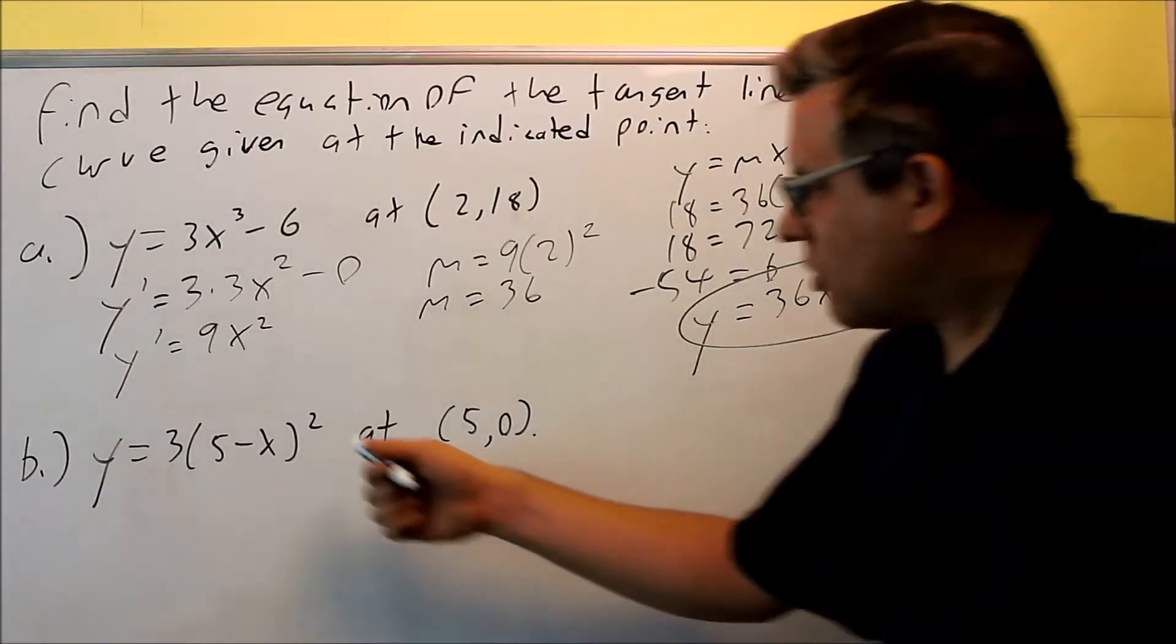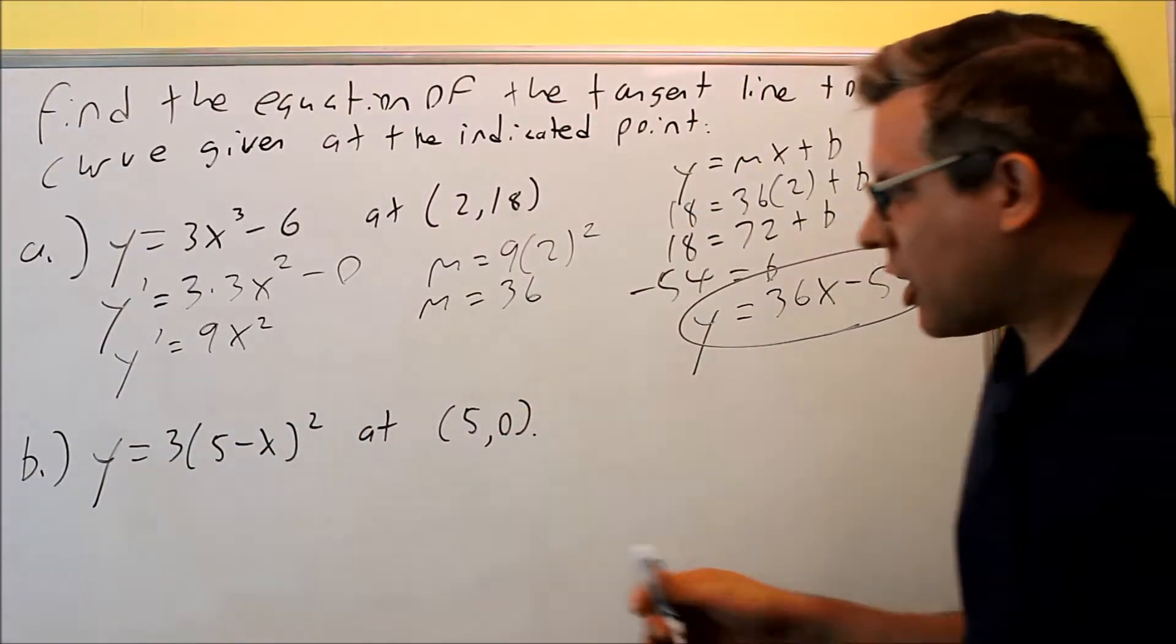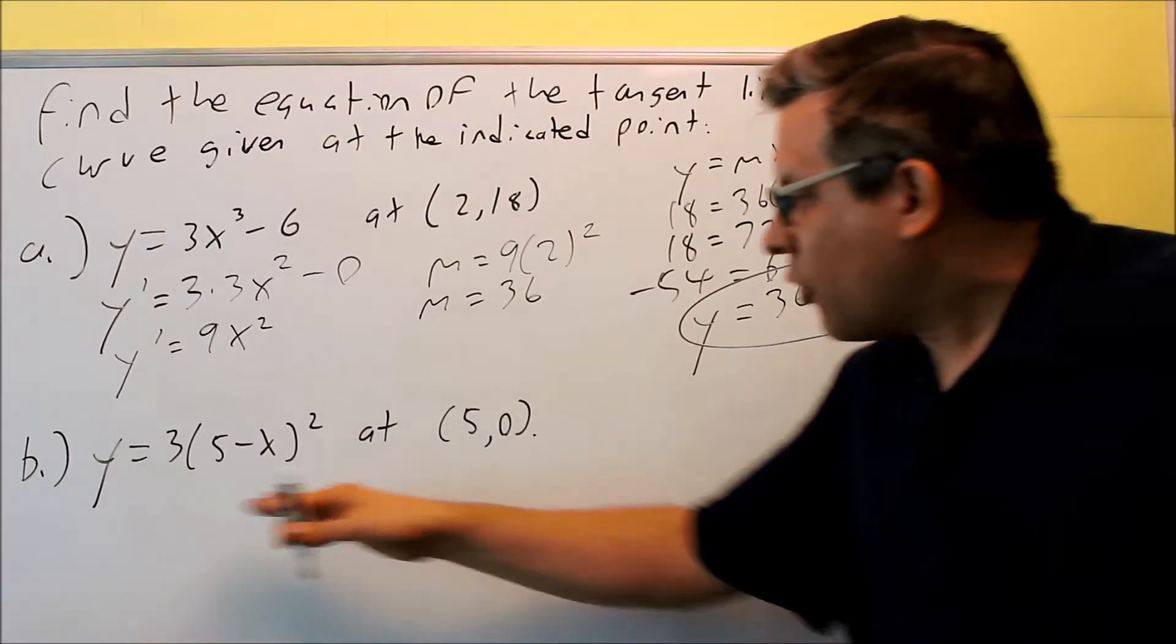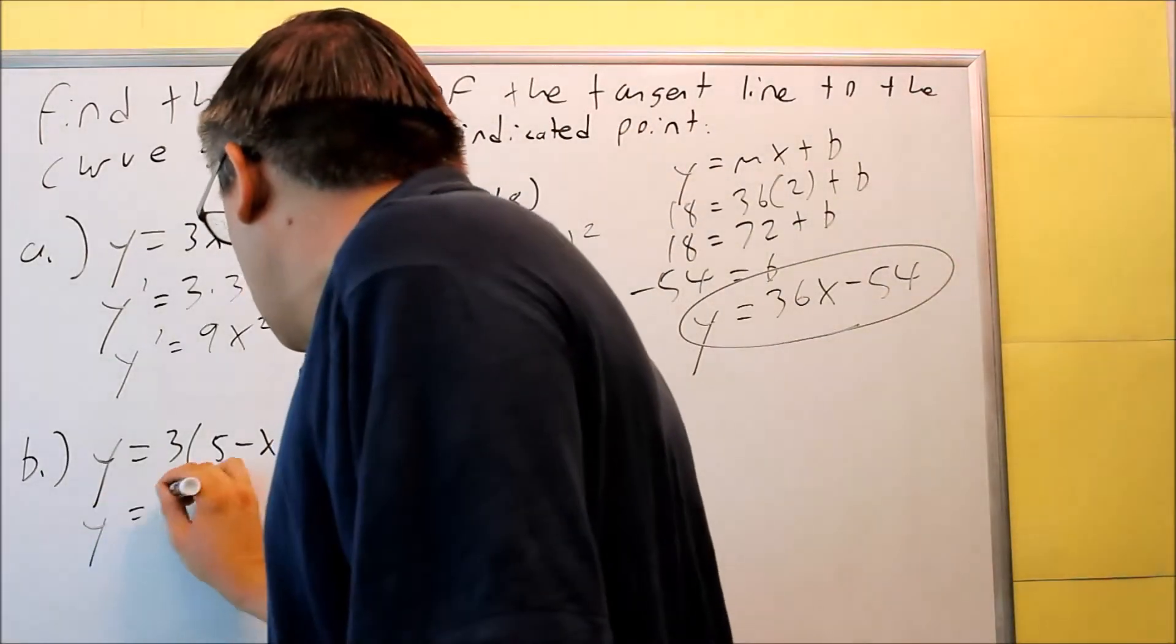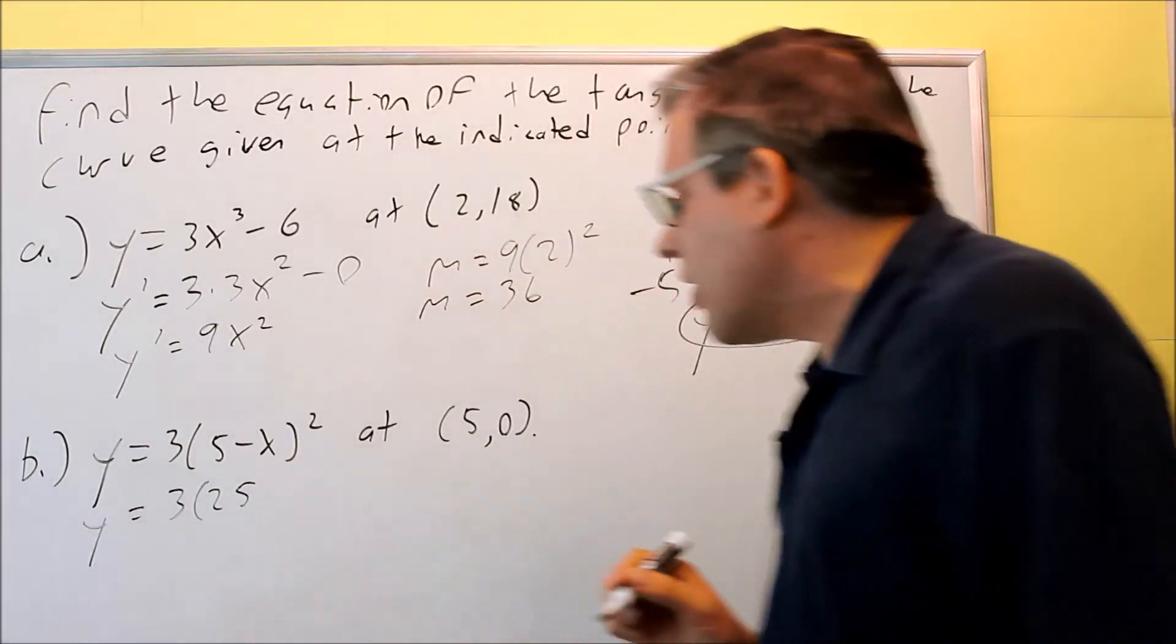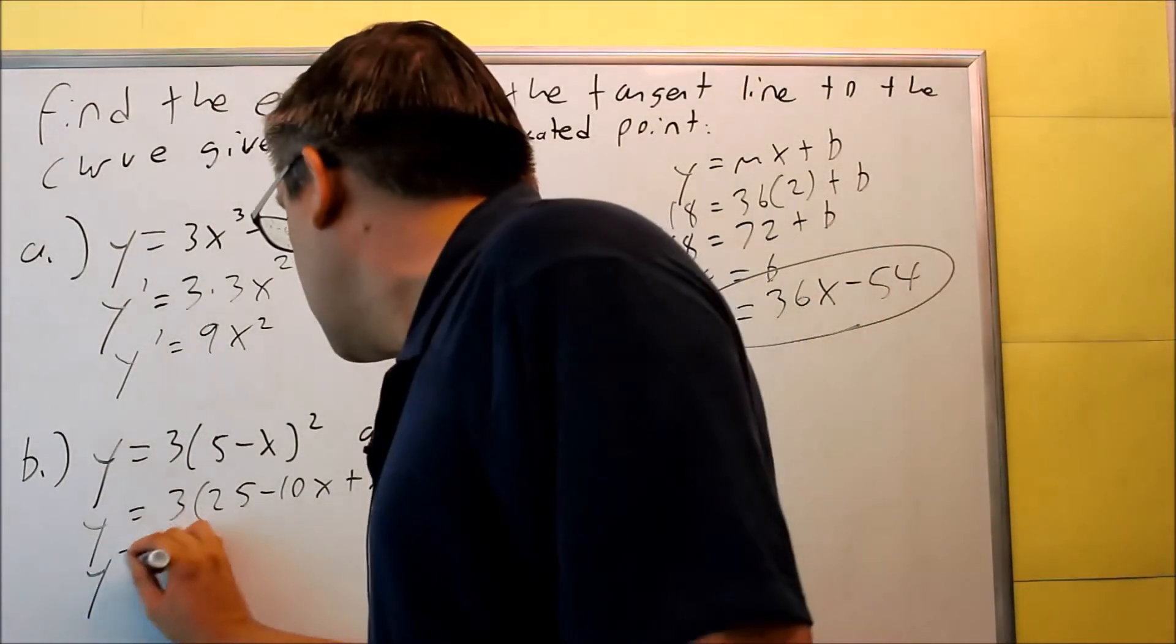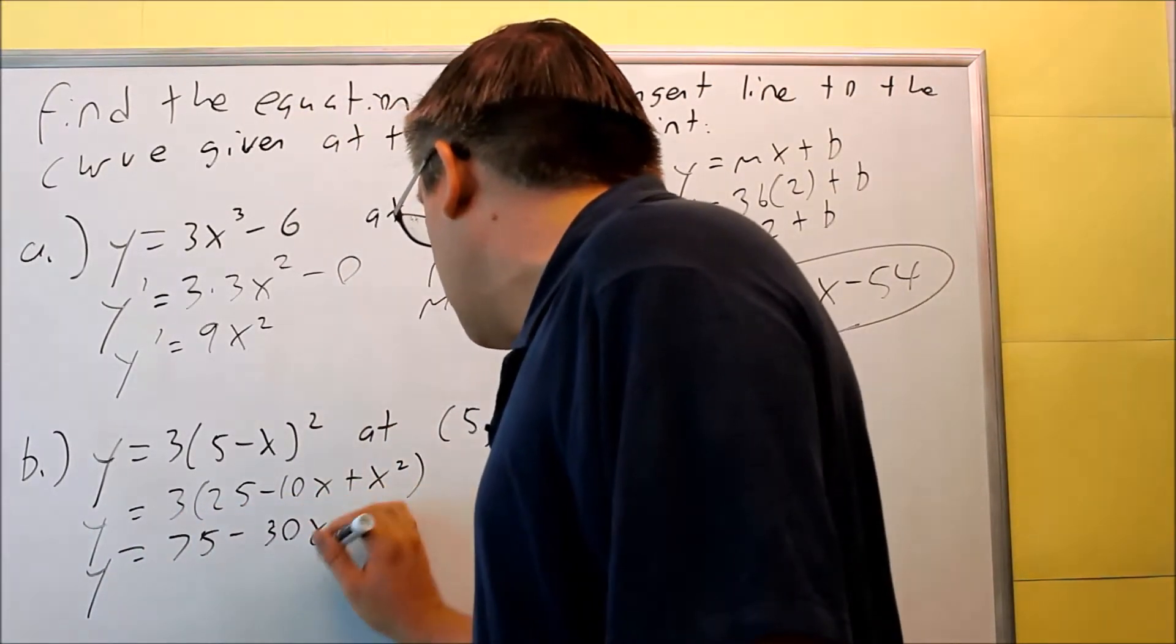For part b, in order to do that one, we need to first multiply all this out, because we can't apply the power rule. We can't just take the two and bring it down front. That's something you're going to learn later called chain rule, but for right now we're going to do it just by multiplying everything out. We're going to multiply 5 minus x times 5 minus x. When you do, you're going to get 25 minus 10x plus x squared. And then you can multiply it through by 3: 75 minus 30x plus 3x squared.